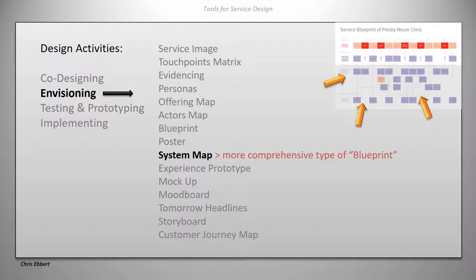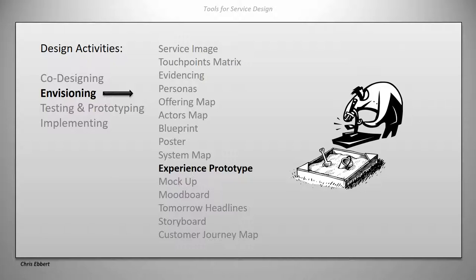A system map is a more comprehensive version of the blueprint — it goes not just from top to bottom but actually has depth. This is something you may even need to build in CAD or as a three-dimensional model. You can create an experience prototype together, aptly described with the metaphor of a sandbox. You basically set up a hospital room and play out different experiences, maybe video them or do audio recording. It is a controlled environment set up specifically for the experience, possibly containing things the current hospital room doesn't have, because it's a prototype — you're testing new things.